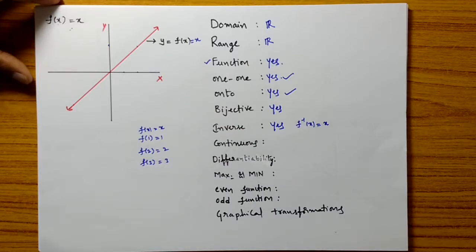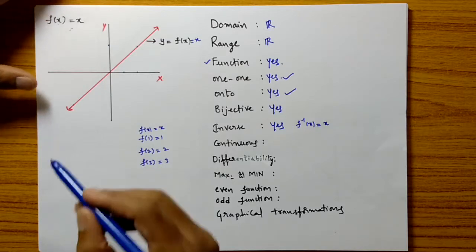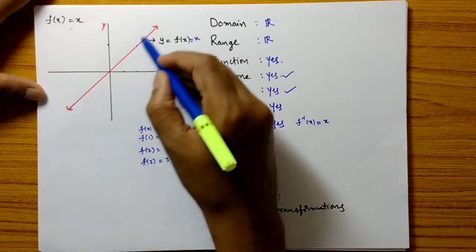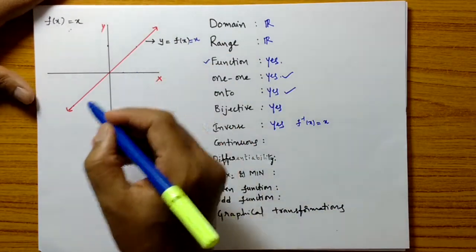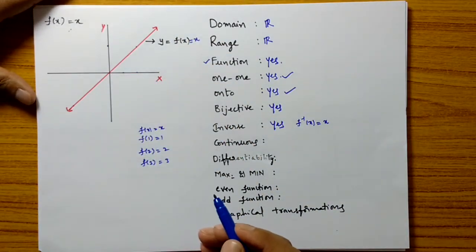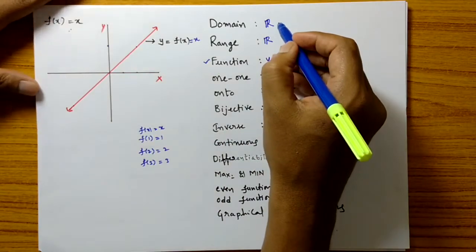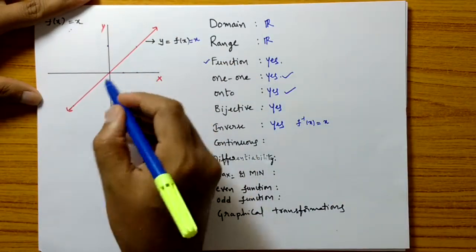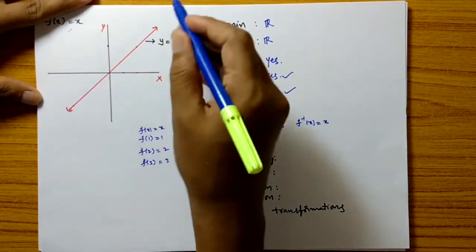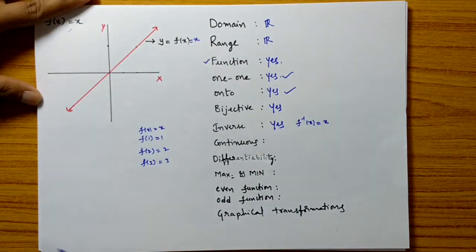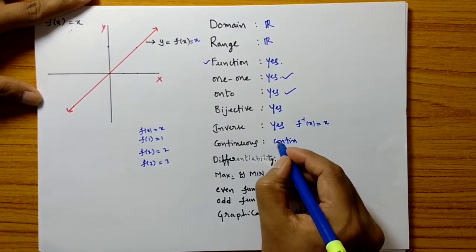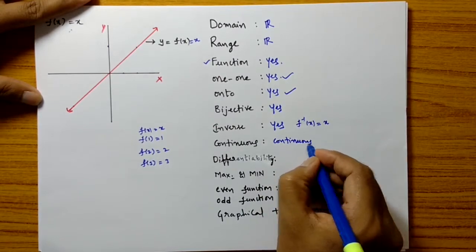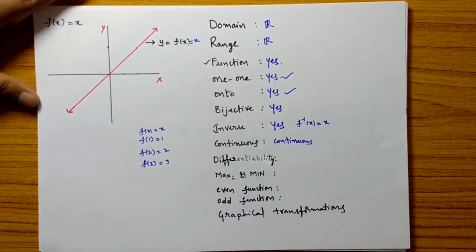Now, is it a continuous function? Observe the graph of y equals x. Is there any gap in the graph on its domain? Its domain is all real numbers, and on its entire domain there is no gap. So this function is continuous.